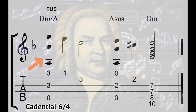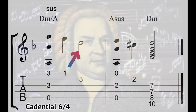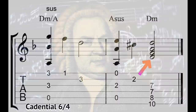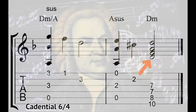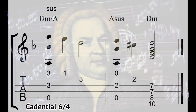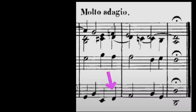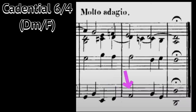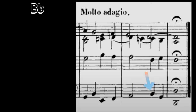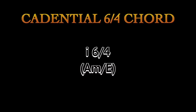The cadential 6-4 chord is masterfully executed by Bach. This chord is a I chord in second inversion — or in the key of A minor, A minor over E. It begins with a suspension and resolution sequence that can be extremely satisfying if done right, broadcasting a sense of finality in a musical phrase.